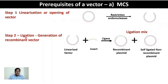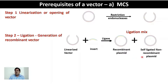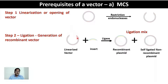In the first step you open the vector with restriction endonucleases. In the second step — ligation — you take your linearized vector opened at the restriction site, add your insert, and use ligase to get a recombinant plasmid. In some cases you will also get a self-ligated non-recombinant plasmid. While you want to promote recombinant ligation, you do not want to promote self-ligation of the vector.